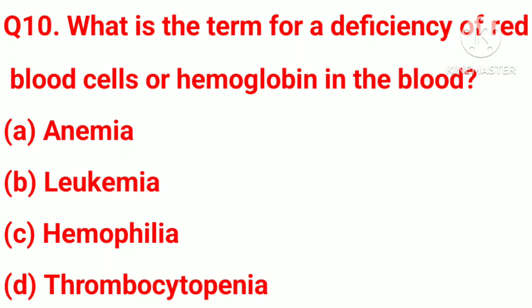Question number 10. What is the term for a deficiency of red blood cells or hemoglobin in the blood? Option A, anemia. Option B, leukemia. Option C, hemophilia. Option D, thrombocytopenia. Correct answer: Option A, anemia.